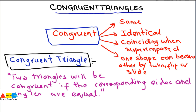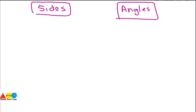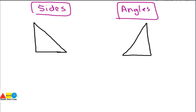Two things are required for saying that two triangles are congruent: first, the sides, and second, the angles. Let's draw two triangles and find out whether they are the same or not. I'll label them as triangle ABC and triangle DEF, and check whether these two triangles are congruent.